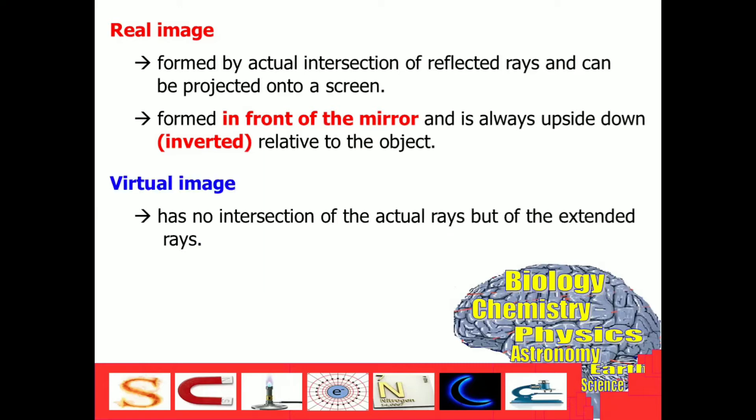On the other hand, virtual image has no intersection of the actual rays but of extended rays. And we will form a virtual image if the image is formed behind the mirror and if it is upright relative to the object.